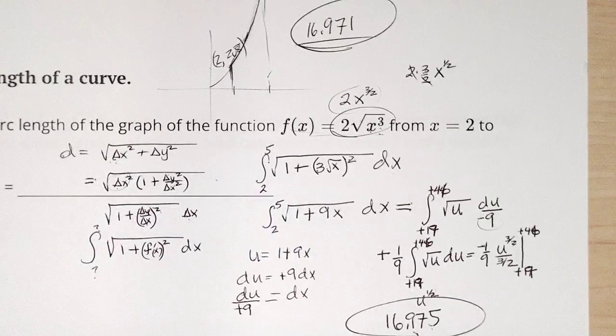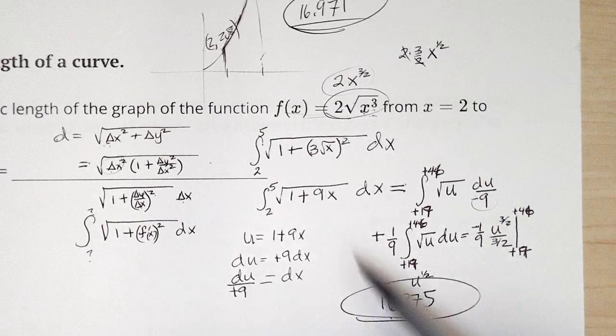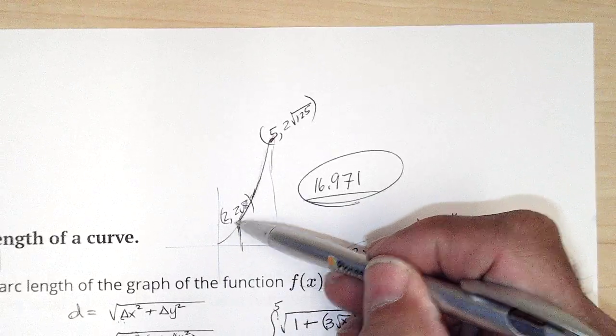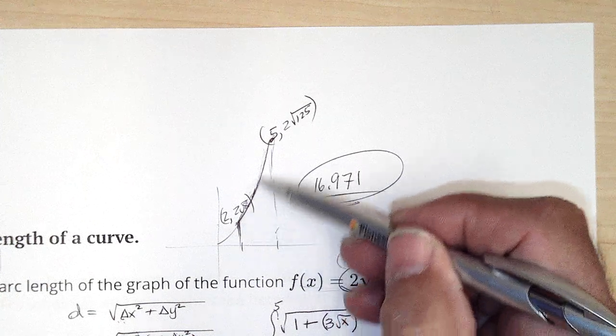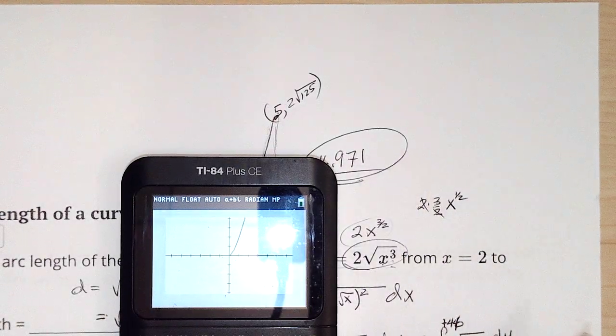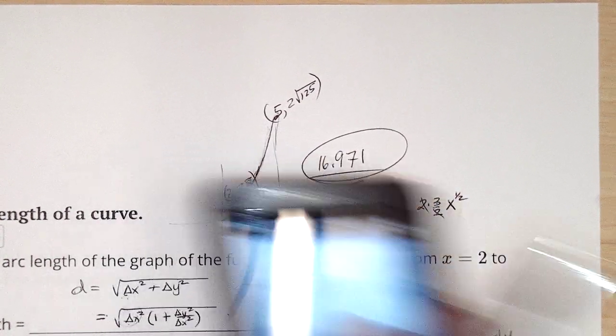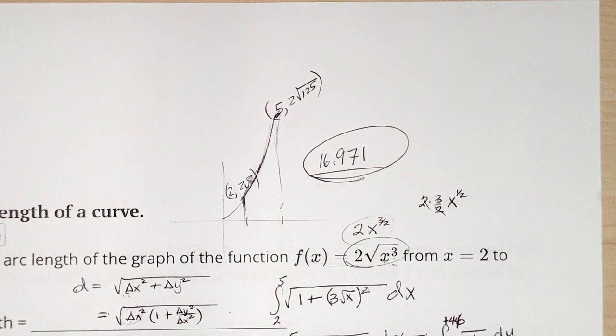So that's the length of the arc, from here to here in this curve. It wasn't curved very much, as you might remember from the graph. It's not curved very much, so it's almost going to be the same as the straight line distance.